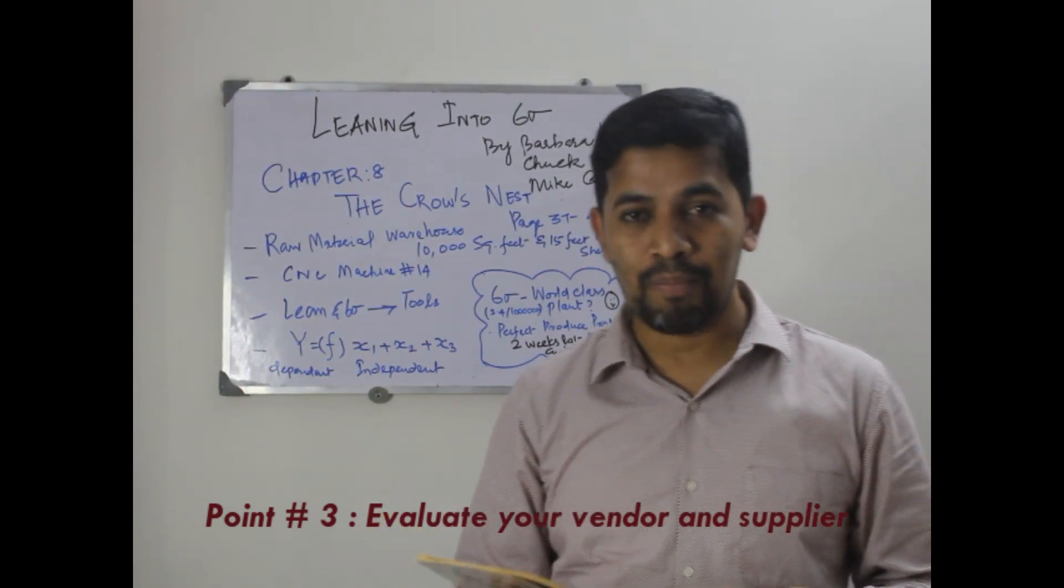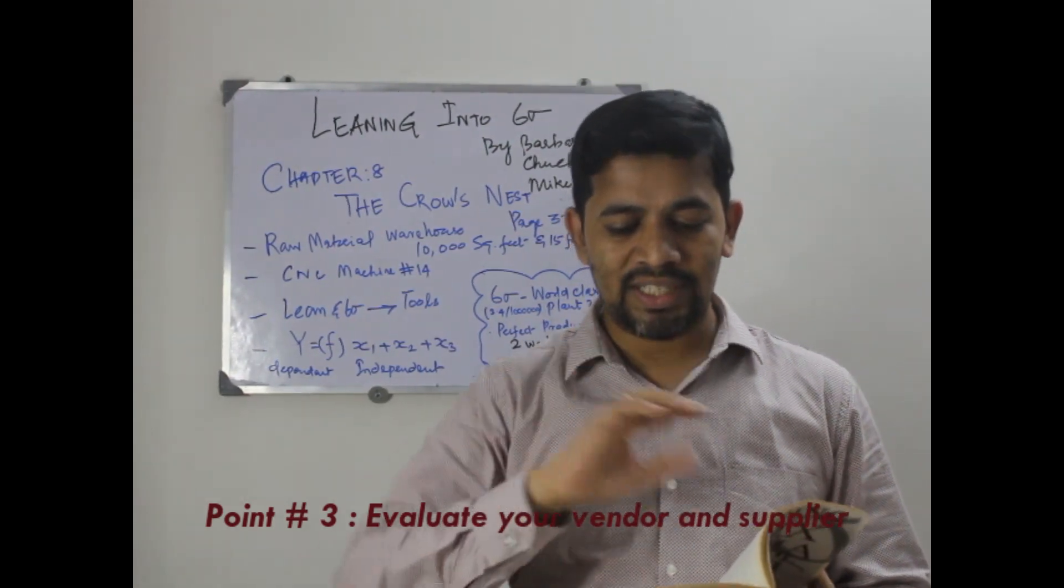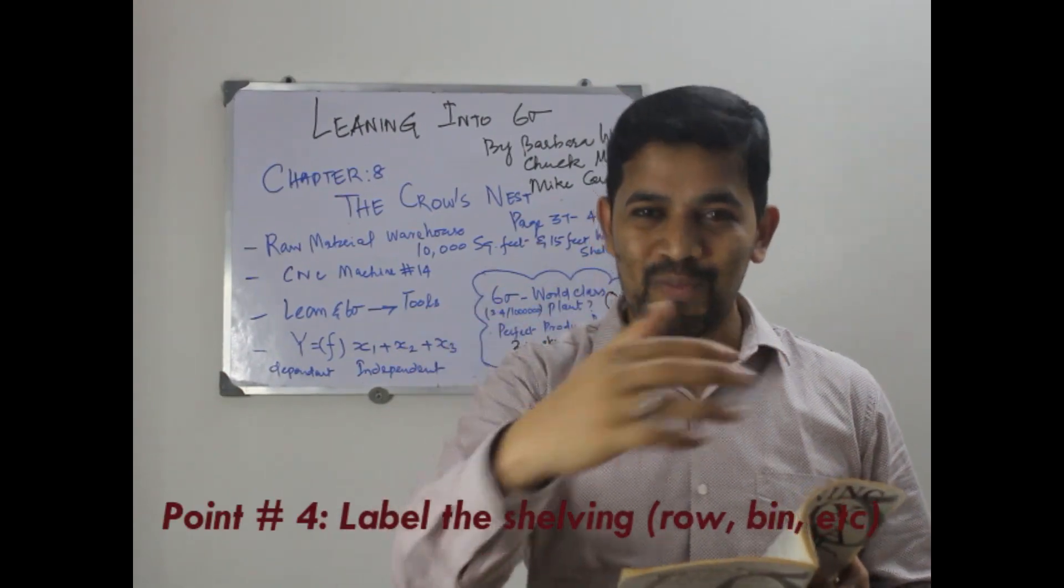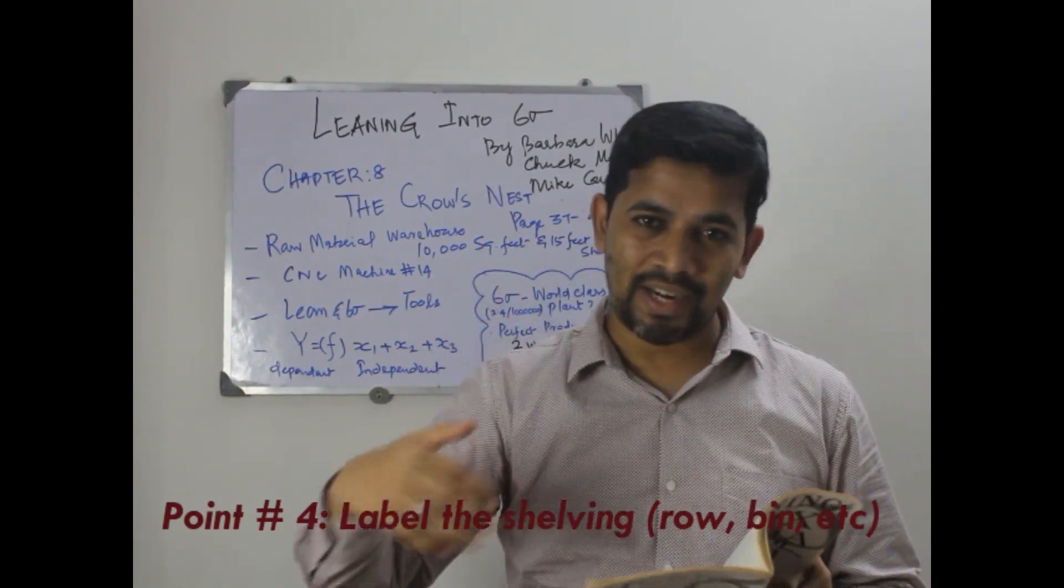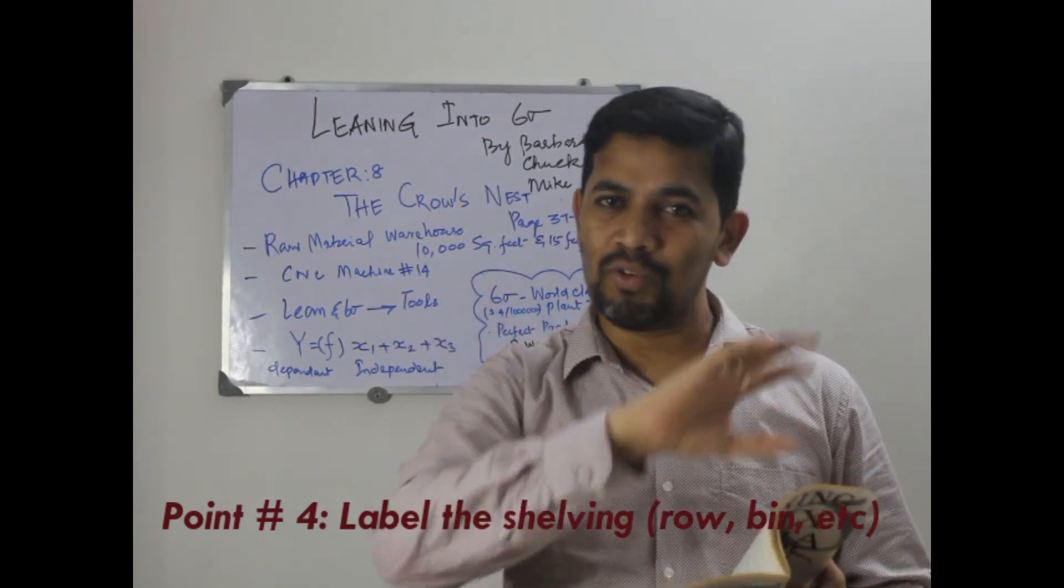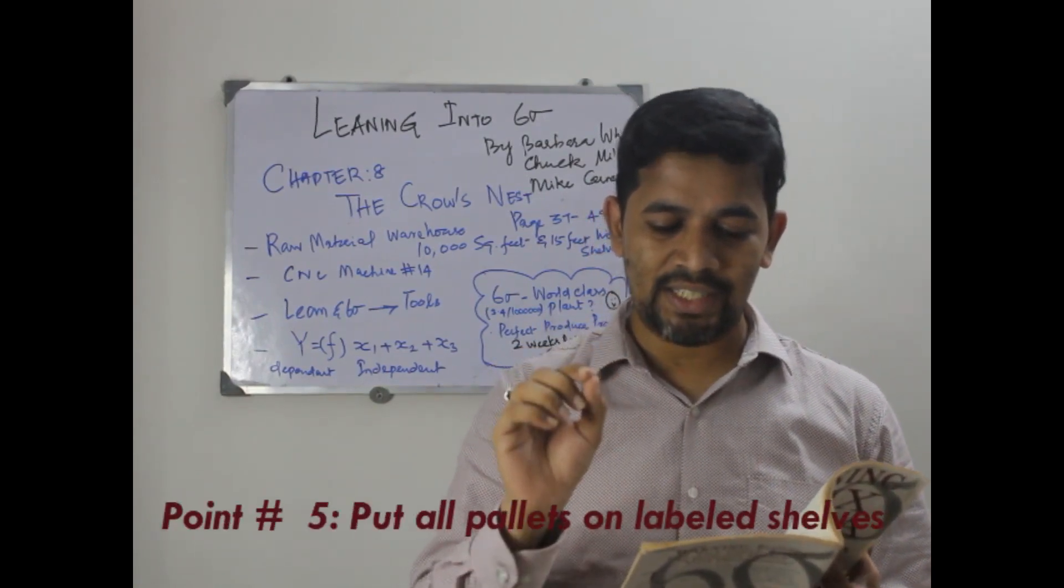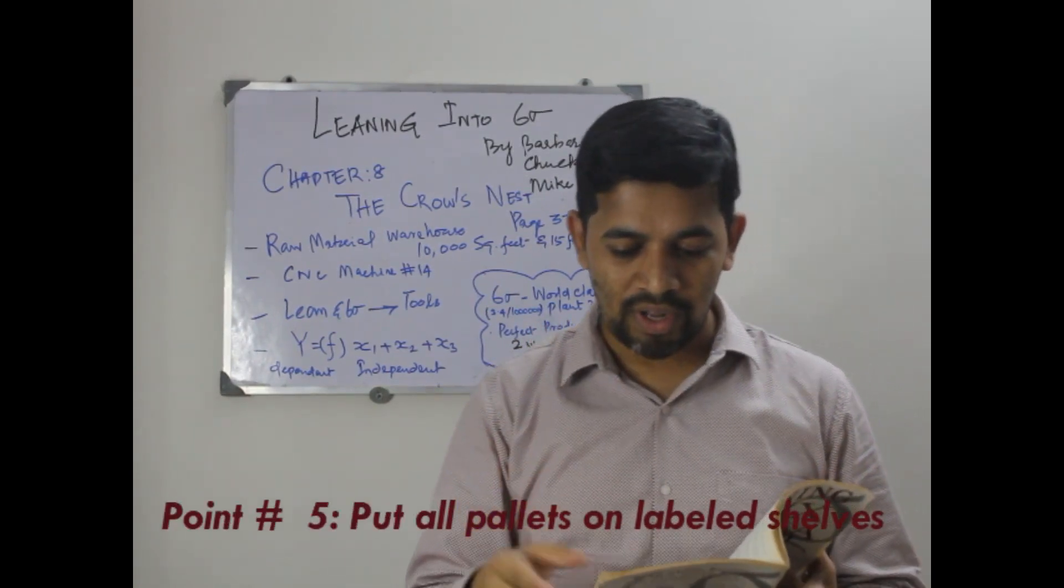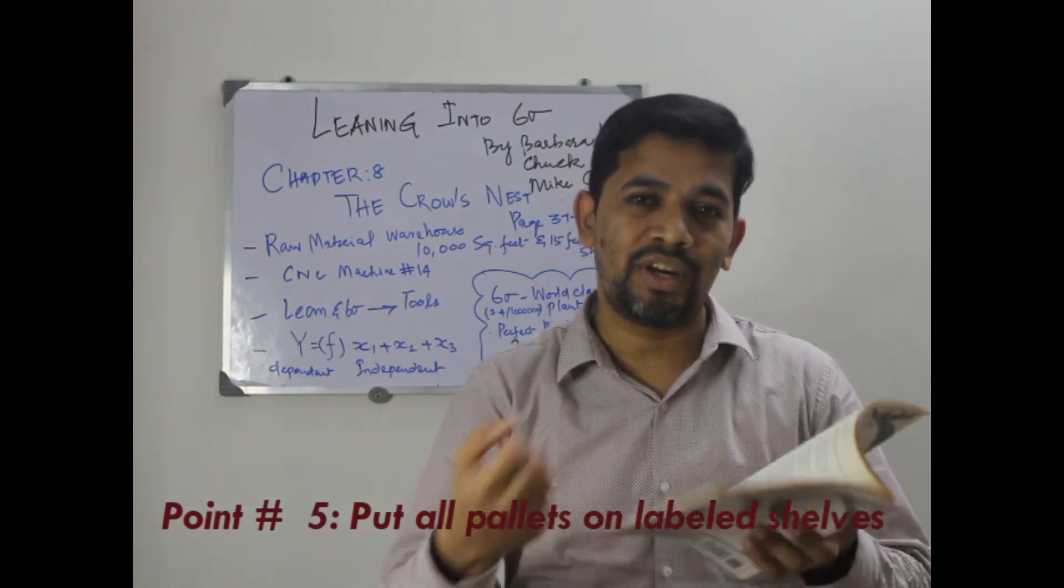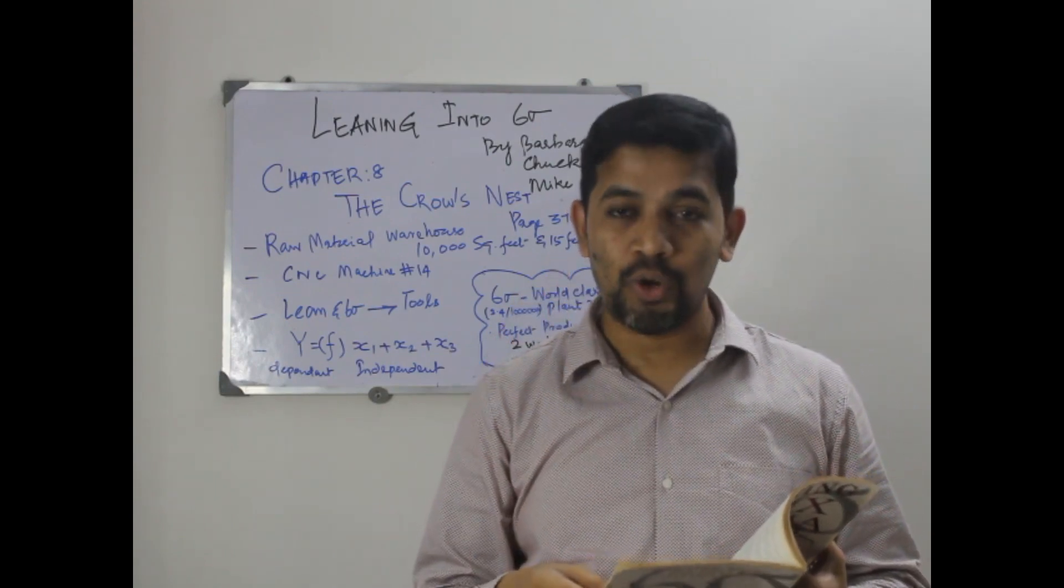The fourth one is label the shelves row-wise, bin-wise, commodity-wise, material-wise, finished goods-wise, scrap-wise and all that. Fifth, put all the pallets on the labeled shelves. Seven, set up a vertical storage for plate stock using the hoist for quick retrieval, so that we will be able to retrieve the material much faster.